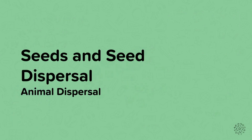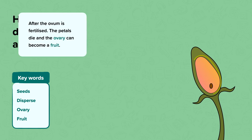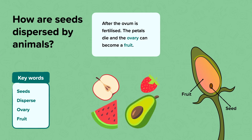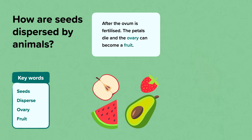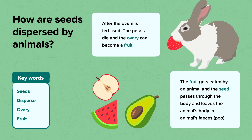Animal dispersal. Now let's think about animals. How do you think they can help to disperse seeds? After the ovum is fertilised, the petals die and the ovary can become a fruit. The apple, strawberry, avocado and watermelon are all examples of fruits that contain seeds. The fruit gets eaten by an animal and the seed passes through the body and leaves in the animal's faeces — their poo.